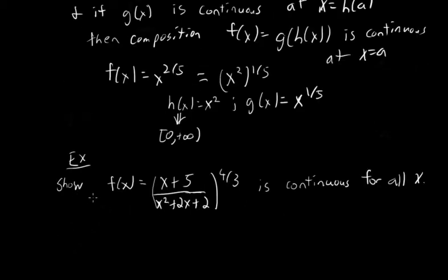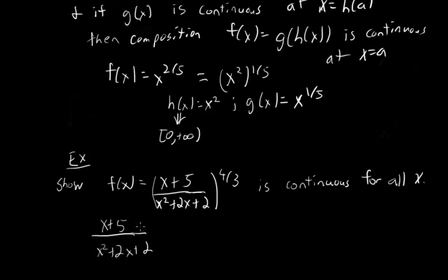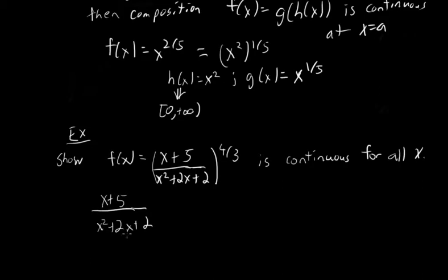Now let's look at an example. We want to show that f of x equals x plus 5 divided by x squared plus 2x plus 2, all raised to the four-thirds power, is continuous for all values of x. First, we'll look at the inner function: the rational function x plus 5 over x squared plus 2x plus 2. We know that rational functions are continuous wherever they are defined — wherever the denominator is not 0. So let's look at this denominator: x squared plus 2x plus 2.